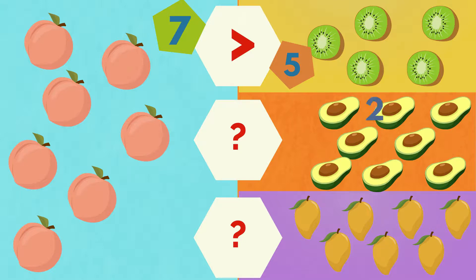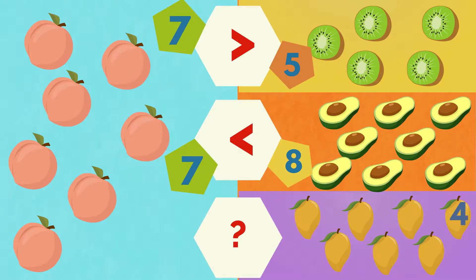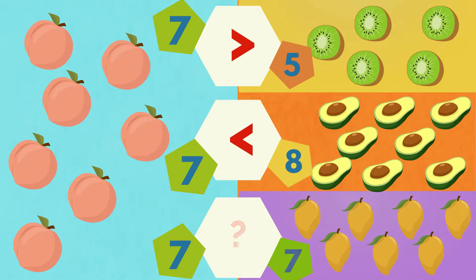One. Two. Three. Four. Five. Six. Seven. Eight. Eight avocados. The peaches are less than the avocados. One. Two. Three. Four. Five. Six. Seven. Seven mangos. The peaches are the same number as the mangos.